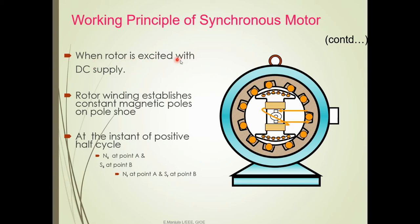When the rotor is excited with DC supply, the rotor winding establishes constant magnetic poles on the pole shoe. At the instant of the positive half cycle: NS is at point A and SS is at point B on the stator; NR is at point A and SR is at point B on the rotor.